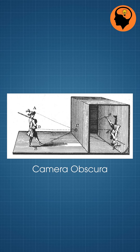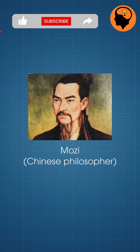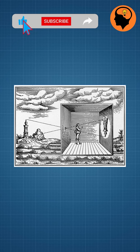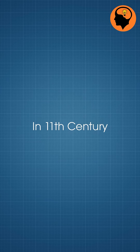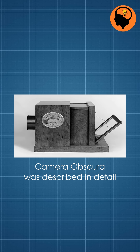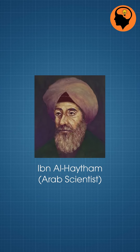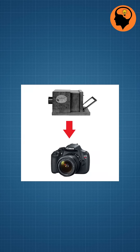The concept of the camera obscura was first recorded by the Chinese philosopher Moji. It was a box with a small hole on one side. Light passed through the hole, projecting an inverted image of the outside scene onto the opposite wall. In the 11th century, the camera obscura was described in detail by the Arab scientist Ebne Al-Hatham. This camera obscura is the pioneer of today's camera.